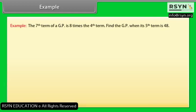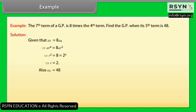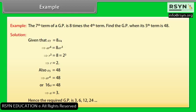Example: The 7th term of a GP is 8 times the 4th term. Find the GP when its 5th term is 48. Solution: Given a₇ = 8 × a₄, so A×R⁶ = 8×A×R³, which gives R³ = 8 = 2³, hence R = 2. Also, a₅ = 48 means A×R⁴ = 48, so 16A = 48, giving A = 3. Hence the required GP is 3, 6, 12, 24, and so on.